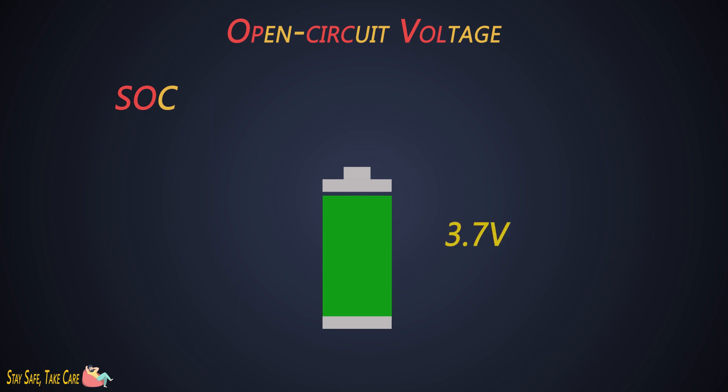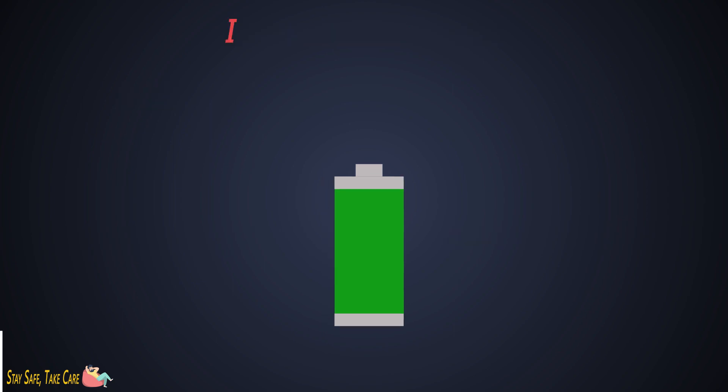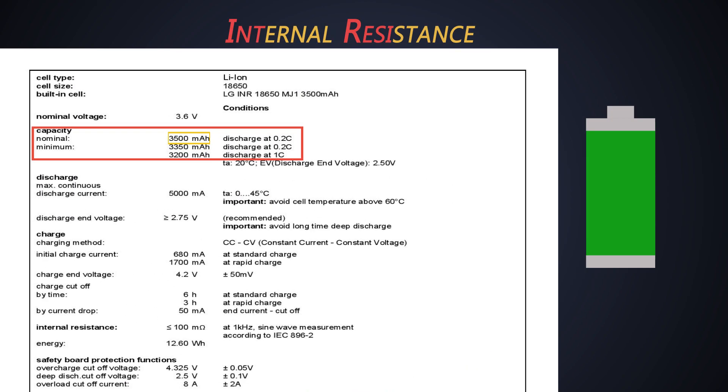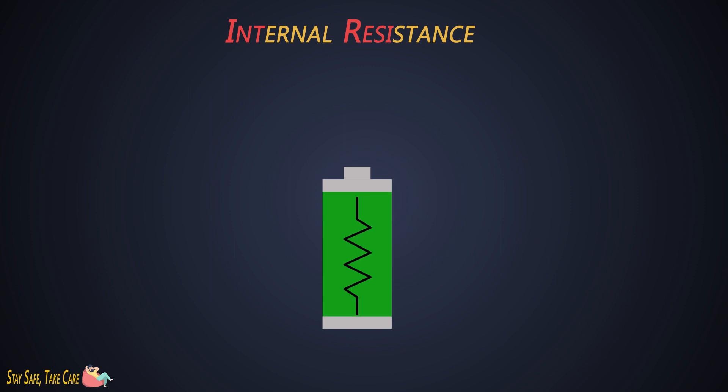Next comes the internal resistance. It is the resistance of a battery and it changes while charging and discharging. It is also dependent on the state of charge of the battery. As internal resistance increases, the efficiency of the battery decreases and cell becomes thermally unstable and it generates heat.